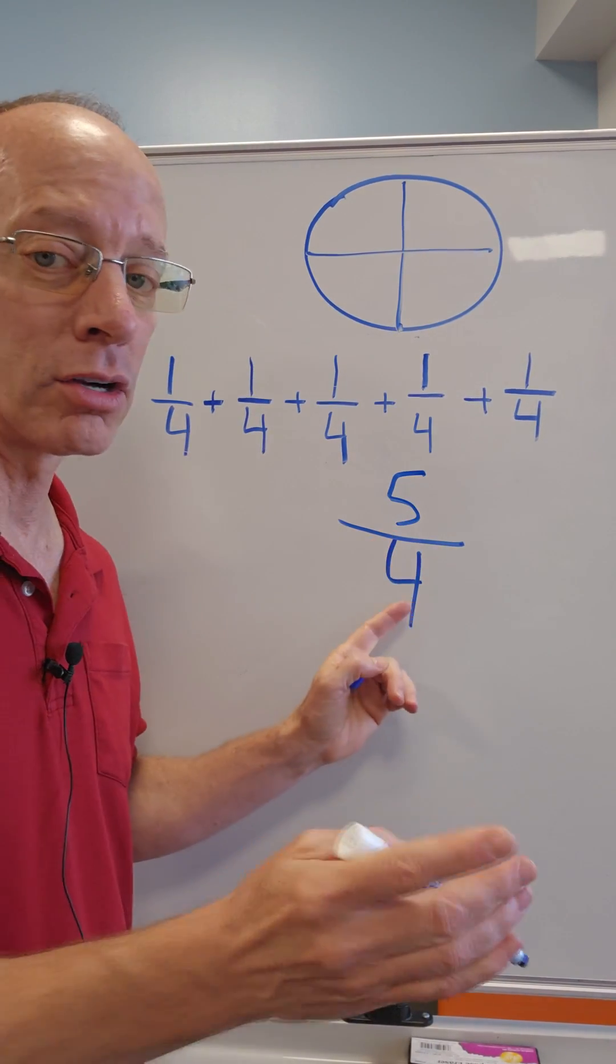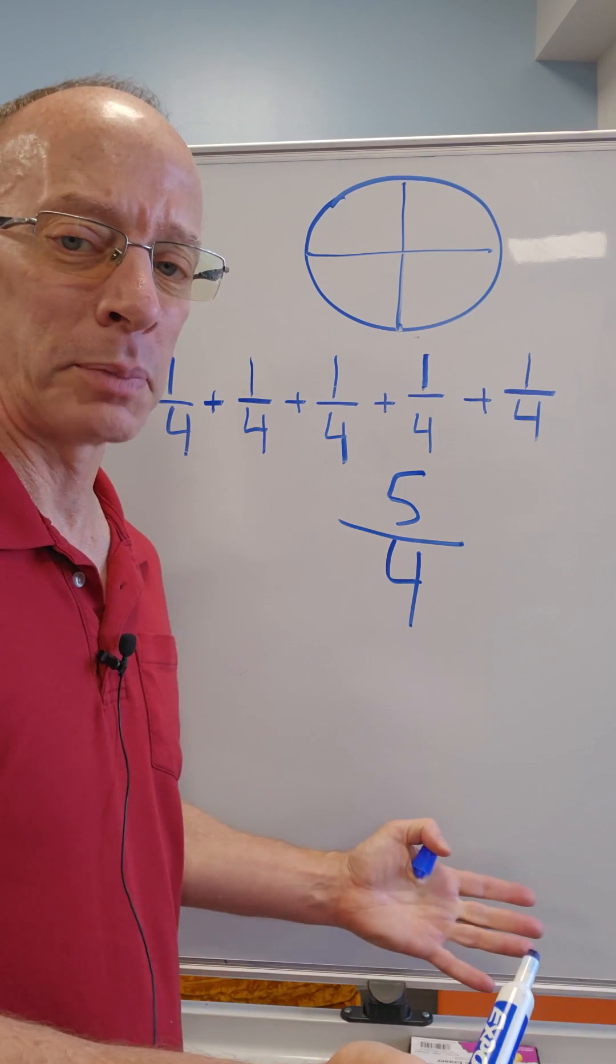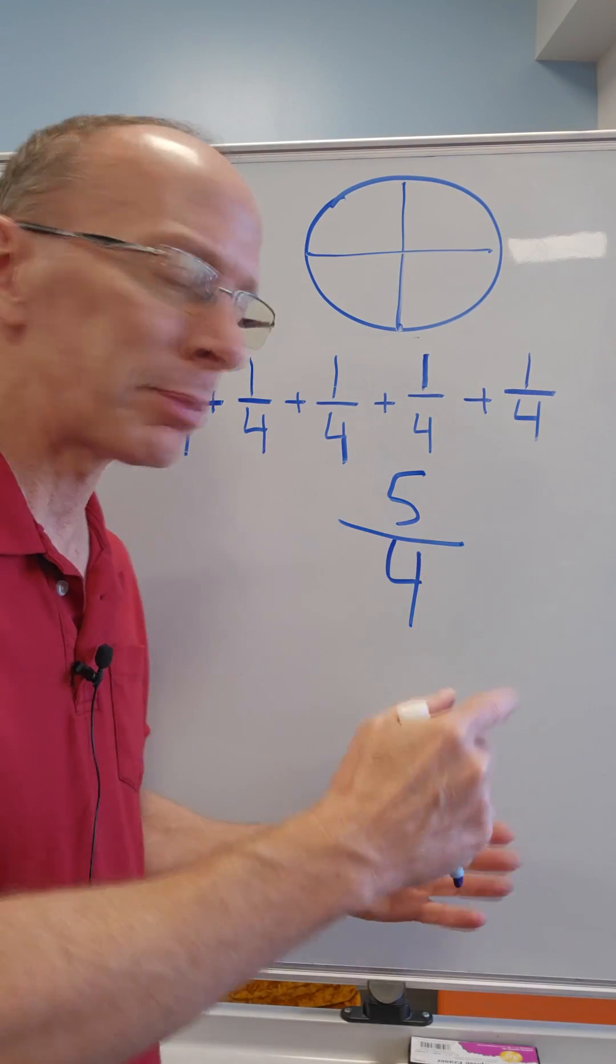Is that the answer? Really close, but that is called an improper fraction. Five-fourths pizza. What is that? It doesn't make sense. So I need to change it over to a proper fraction.